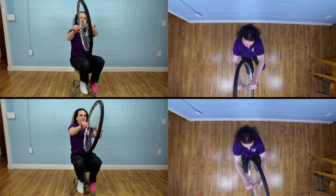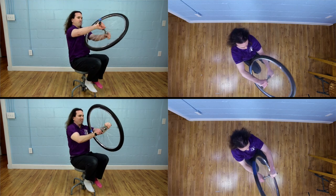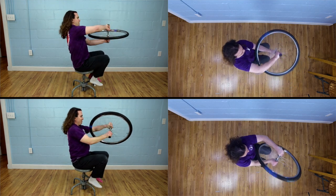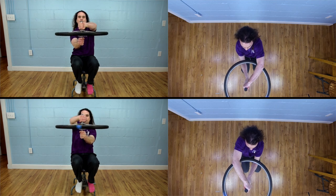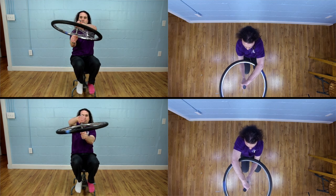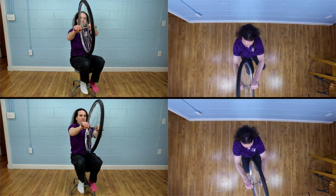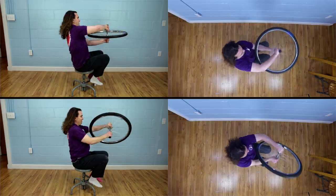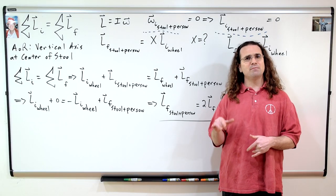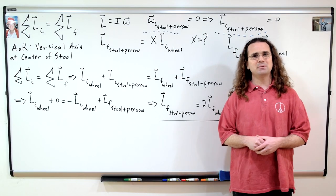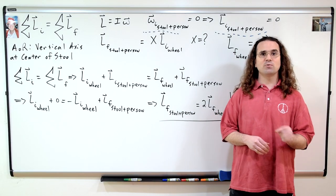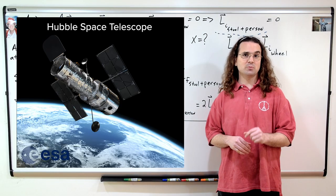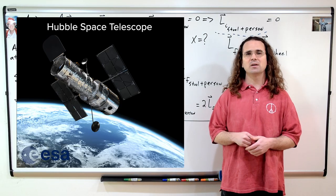Nowhere in the problem did it say which direction the person rotates the wheel. Just so you know, this same physics concept is how NASA rotates the Hubble Space Telescope.